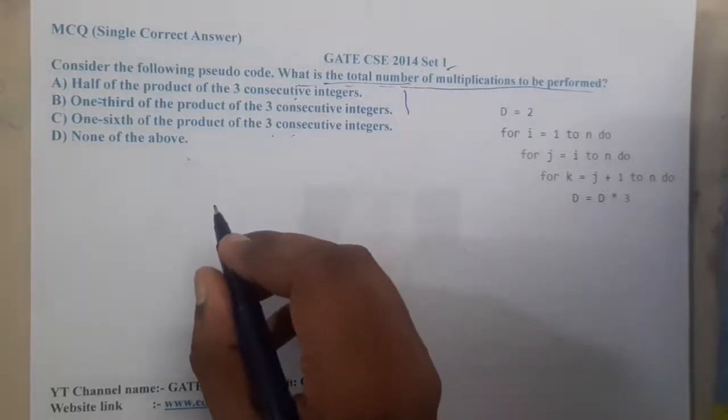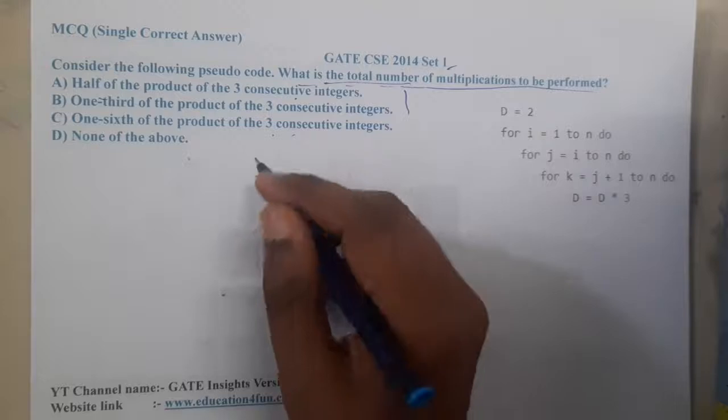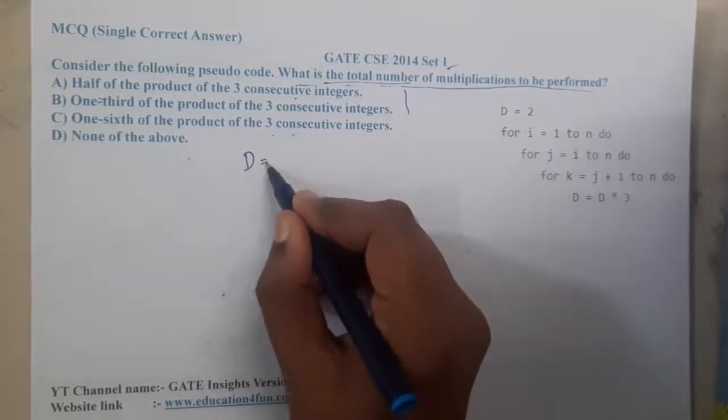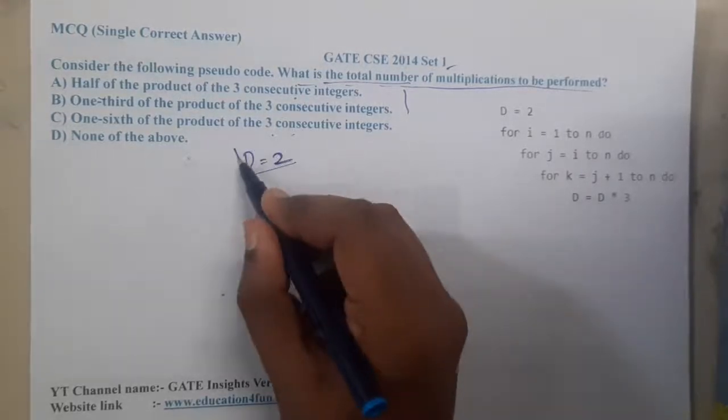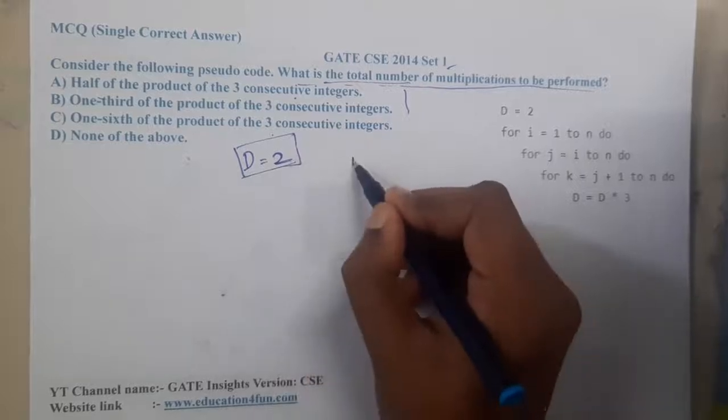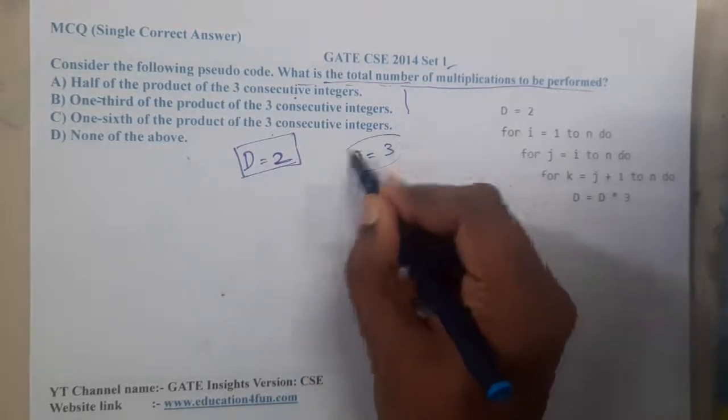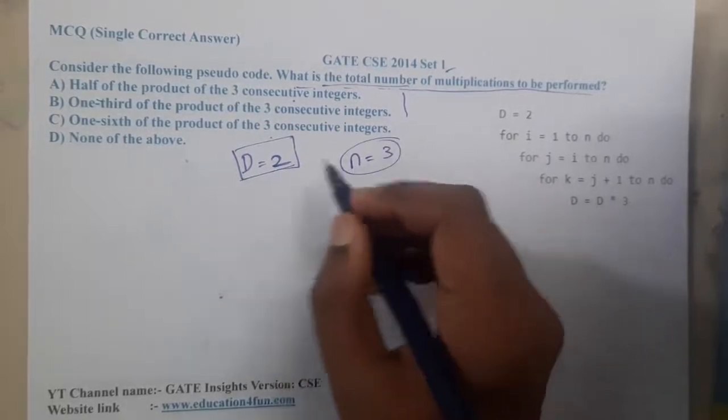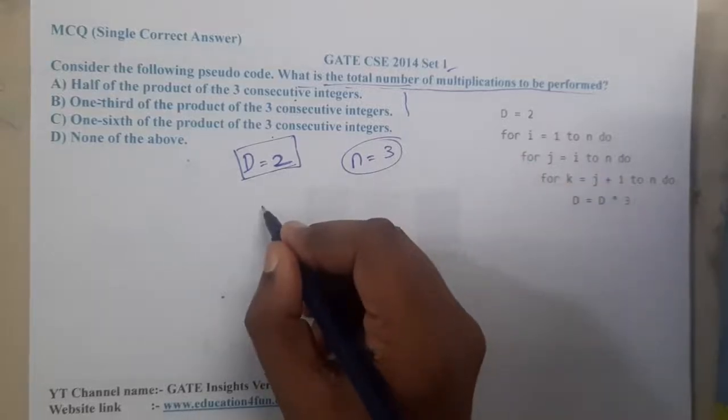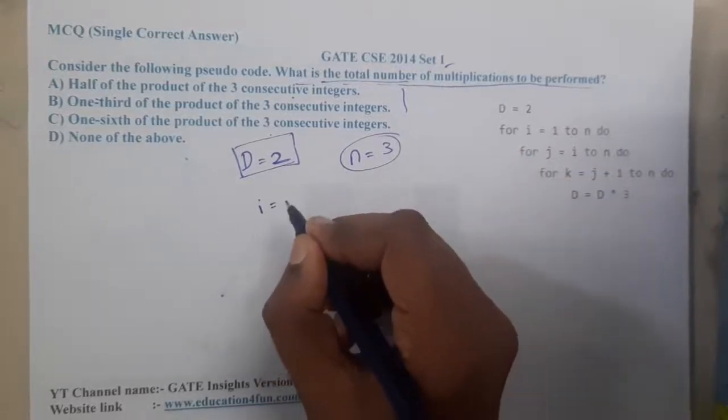They gave d equals to 2. For our easy understanding let us take n equals to 3, I think it will work. So let us start the first for loop. First for loop will work from i equal to 1, 2 and 3. Similarly the second for loop will work internally for 1, 2, 3.